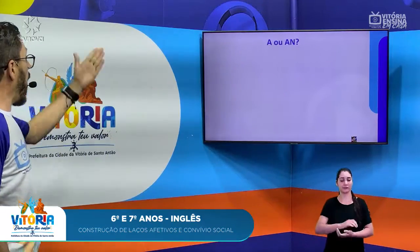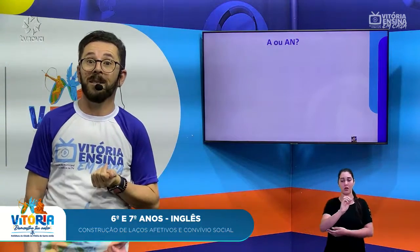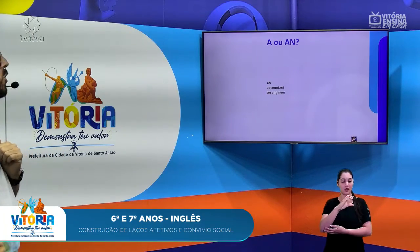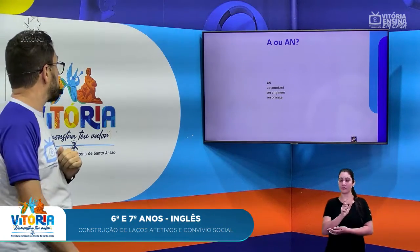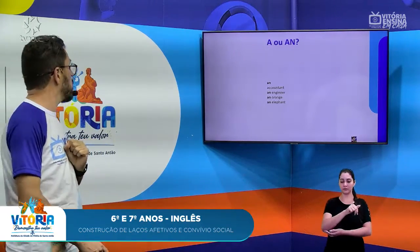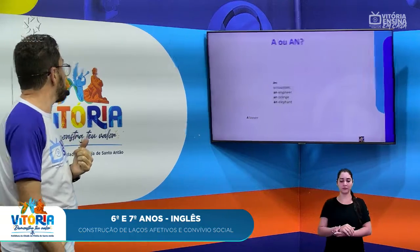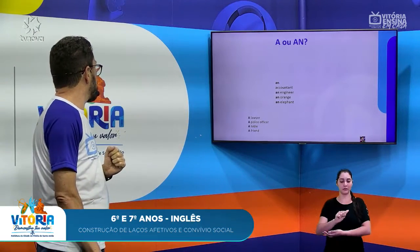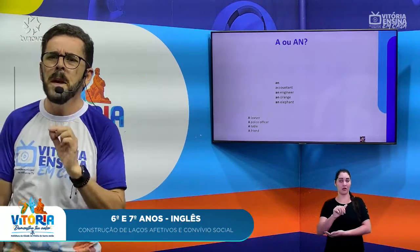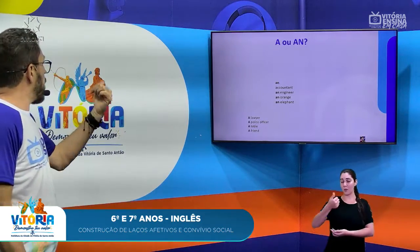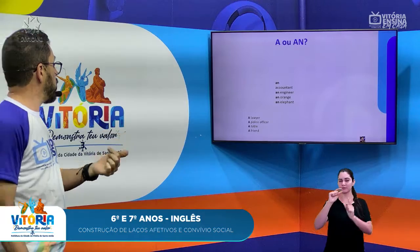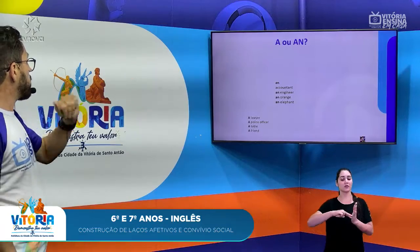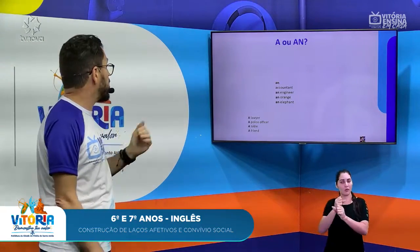Let's continue. So, "a" or "an" — quando usar? Look here: "an accountant", "an engineer", "an orange", "an elephant". Que em português seria: um contador, um engenheiro, uma laranja, um elefante.